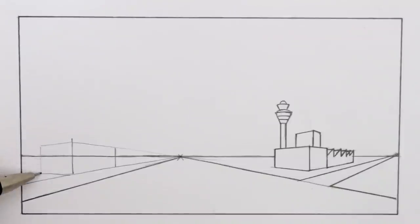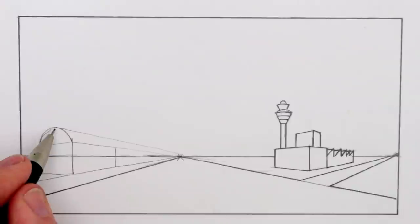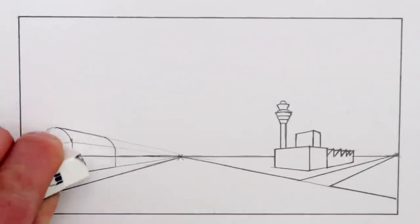I'll put a curved roof on the top of this building. Again we can find the top by drawing another diagonal line to the vanishing point. For the back curve just copy the front curve. Now I can erase some of the guidelines that we no longer need.